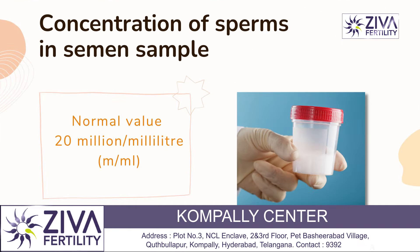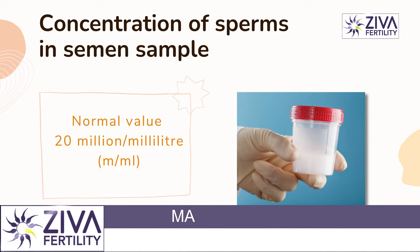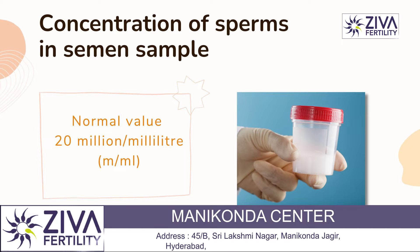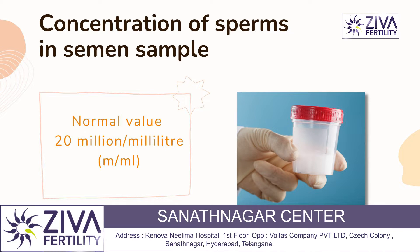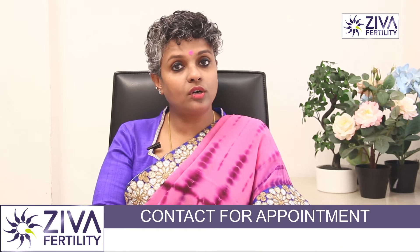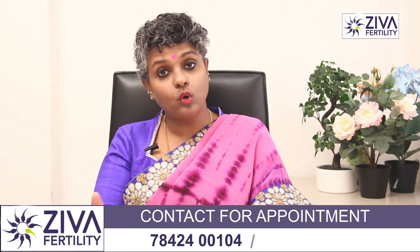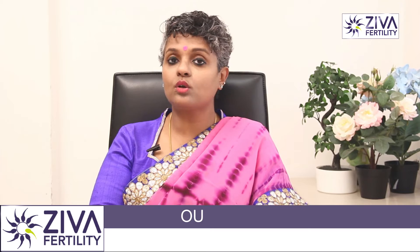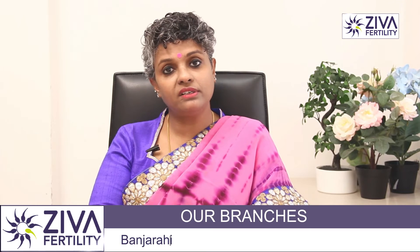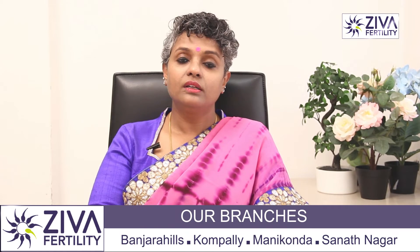We look at the concentration of sperms in the semen sample. It is reported per milliliter, and the normal value is 20 million per milliliter. Anything above this does not mean a higher success rate, and anything below this has also given success in many patients.